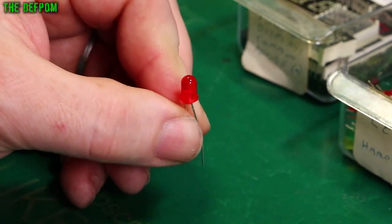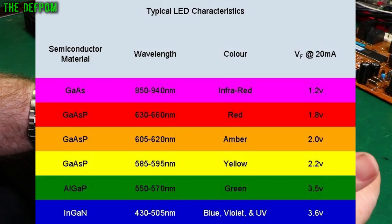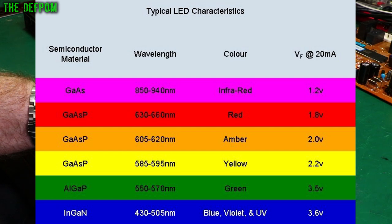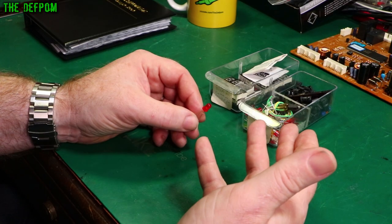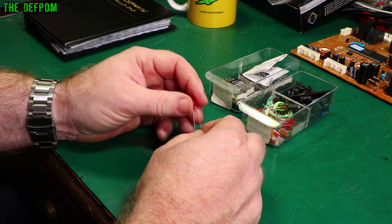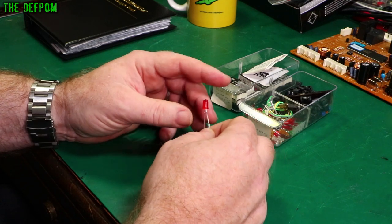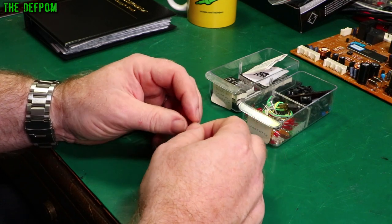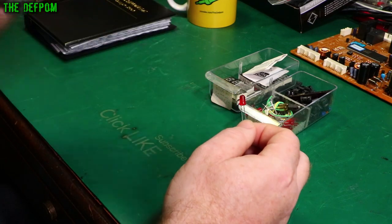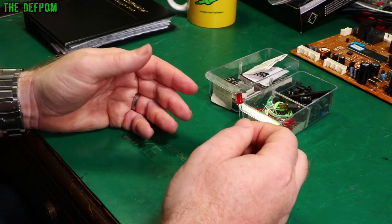LEDs have different voltages. Depending on the color, the voltage to drive the LED will be different. Red is typically about two volts or so — if you have the datasheet for the specific LED, I suggest you look at that. Currents are usually around 20 milliamps as a common drive current, sometimes 30 milliamps or more. High brightness ones could be 50 milliamps or more.